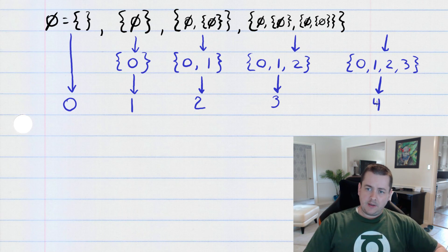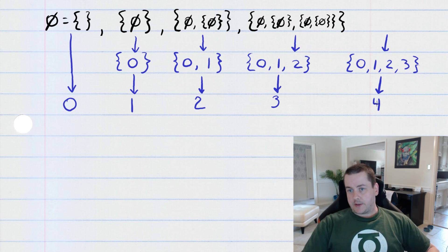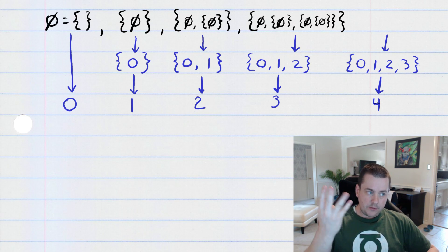And you can keep going. The next thing we would do is construct the set containing zero, one, two, three, and four. And that set would have five elements, and that becomes the number five.